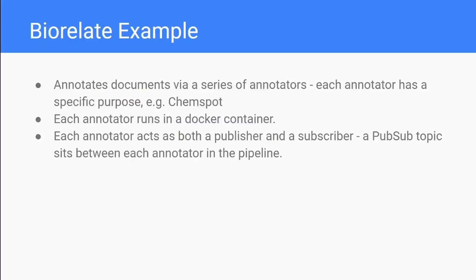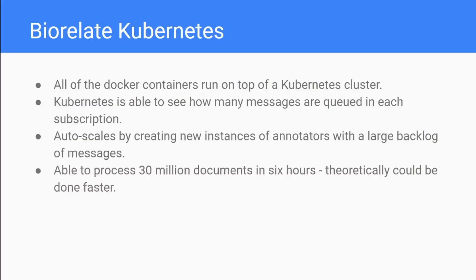Going back to Biorelate as an example: we use a pipeline that annotates documents by a series of annotators, each with a very specific purpose. For example, ChemSpot is quite computationally expensive so it benefits well from scaling - it finds mentions of chemicals in a document and annotates those so we can search for them later. Each of our annotators runs in a Docker container, and each container acts as both a publisher and a subscriber. A PubSub topic sits between each annotator in the pipeline.